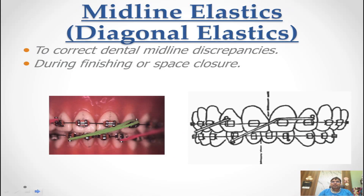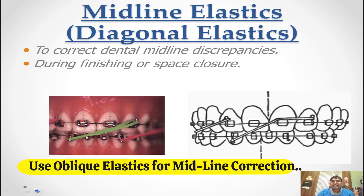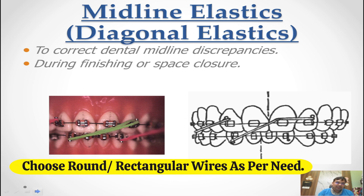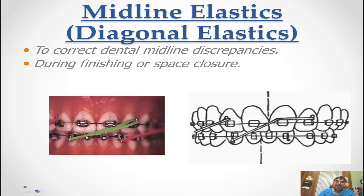For midline elastics — a common question — when the midline has deviated, you need to determine which segment has moved by checking the molar relation and intercuspation. The side that is not in proper occlusion should have elastics applied in an oblique manner. If the lower arch is ideal, keep it on rectangular heavy wire and use a light wire on the arch you want to move, then apply cross elastics. Adjust the wire dimension based on whether you want to move both arches or keep one stable.